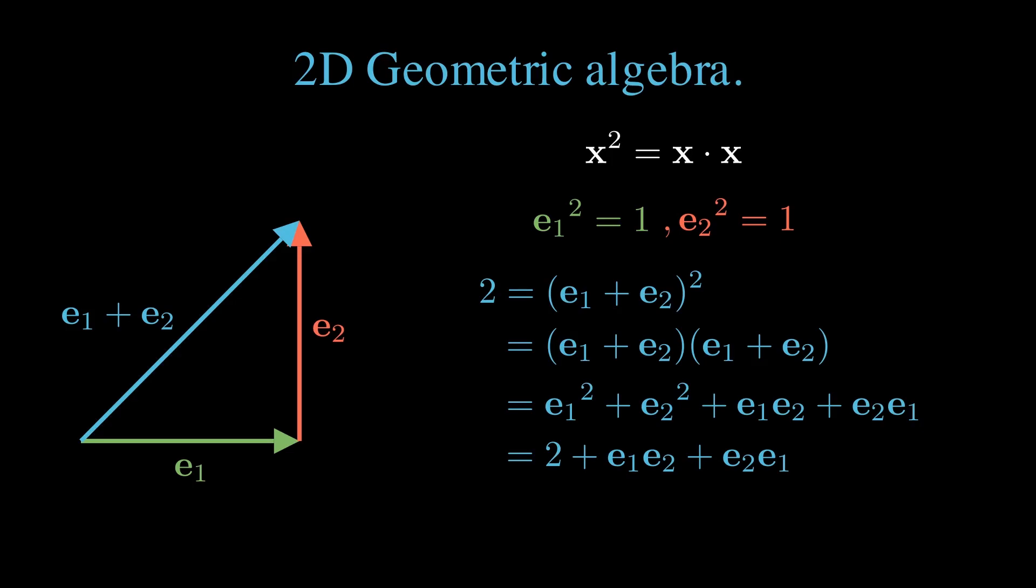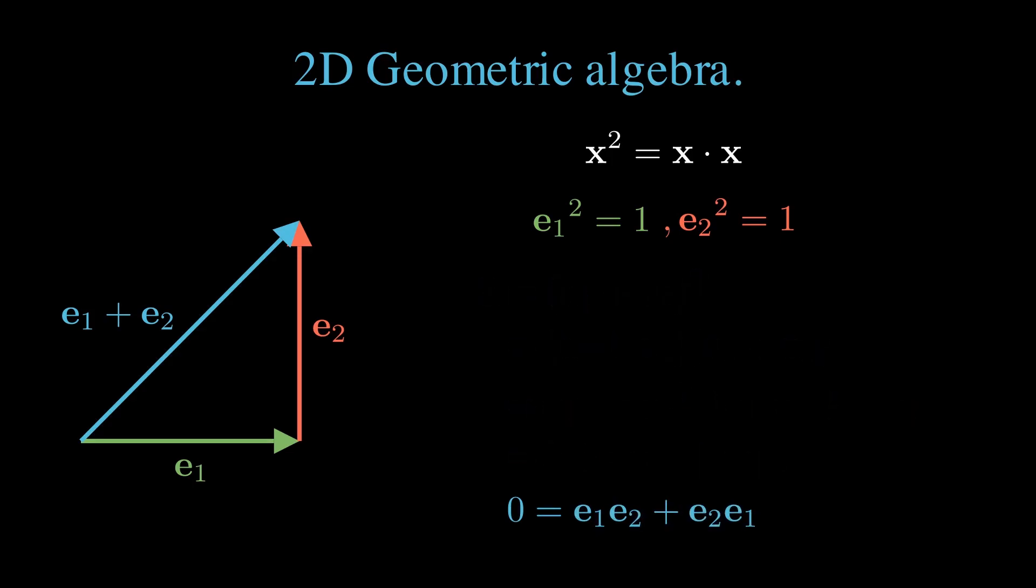We have 2 on each side, which cancels out, leaving 0 equals E1 E2 plus E2 E1. We may rewrite this as E2 E1 equals minus E1 E2.